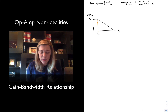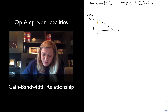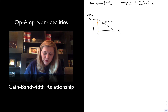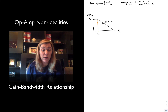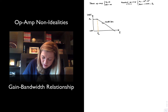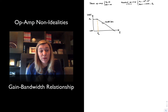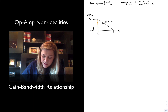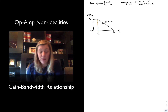Since we have a single pole model, at least until we get to the next pole, the gain is going to decrease after the break frequency at a rate of negative 20 dBs per decade. At some point, the amplitude is going to reach a value of 1, or 0 dBs. At the frequency where that happens, that's what we term the transition frequency F sub T, sometimes called the small signal bandwidth.